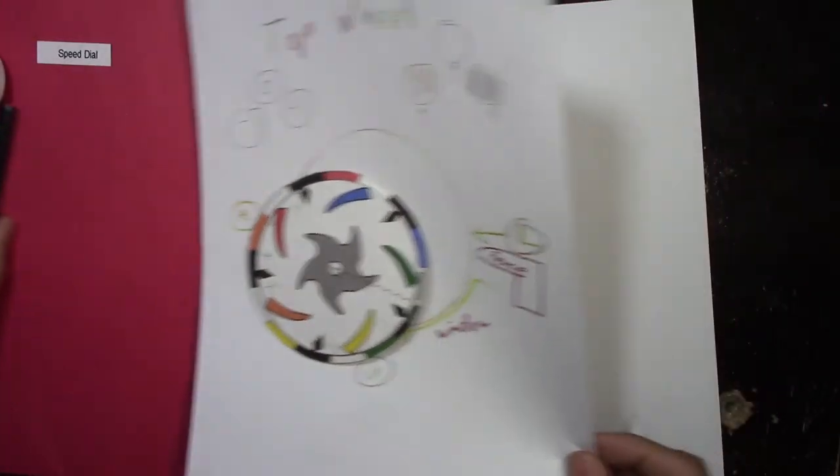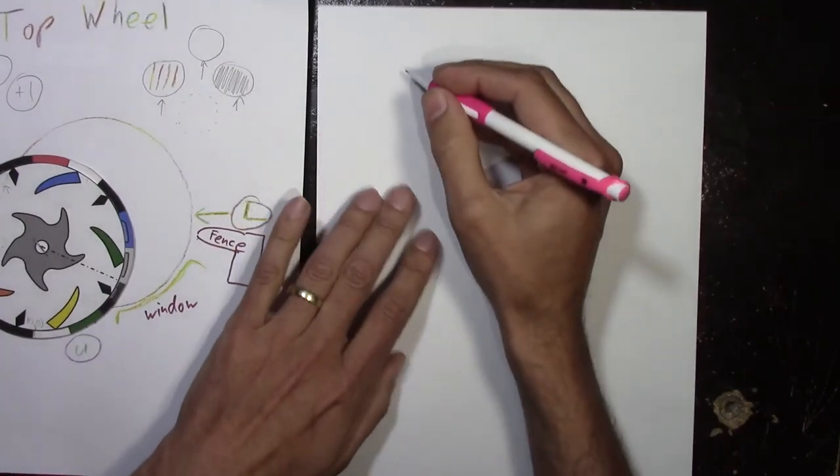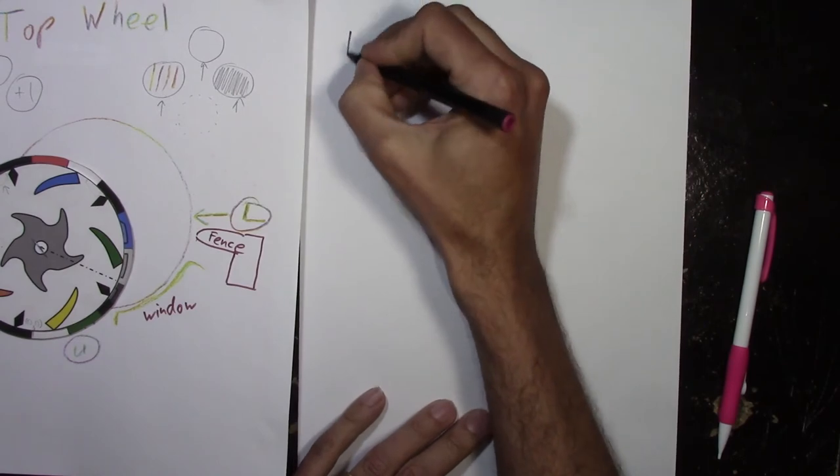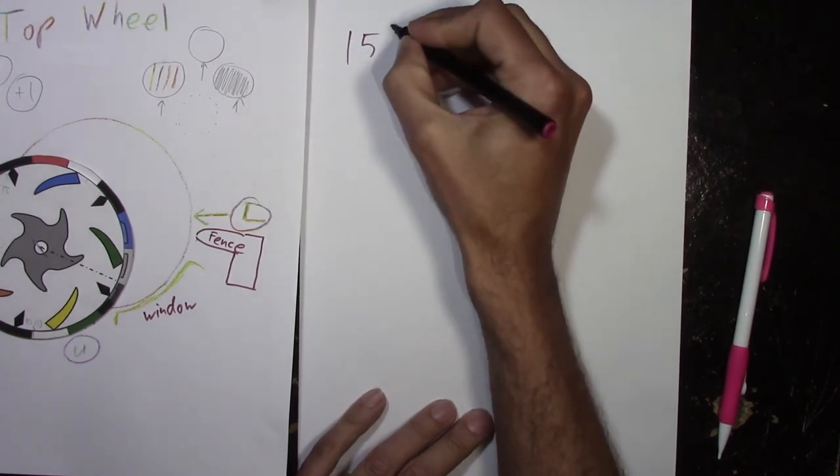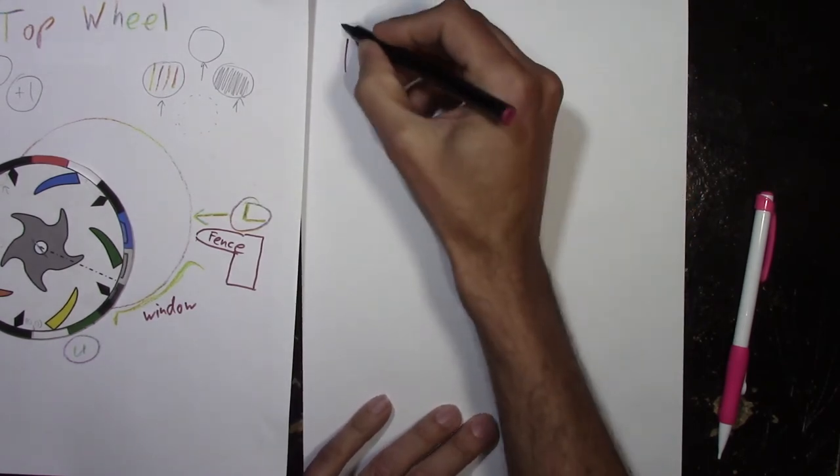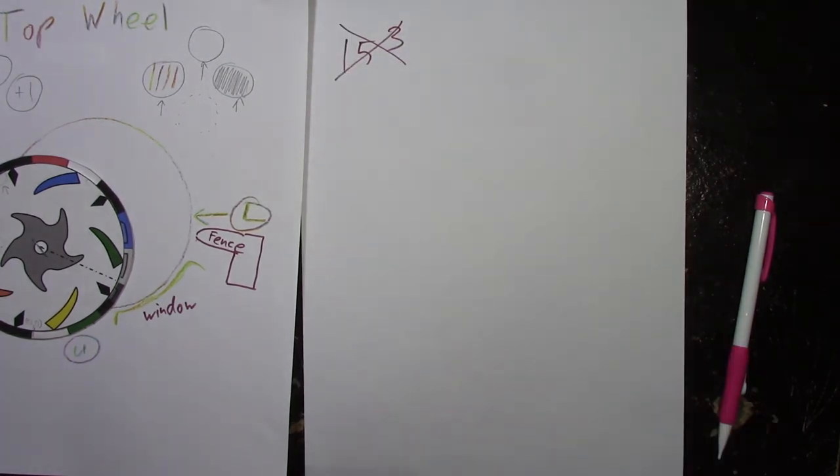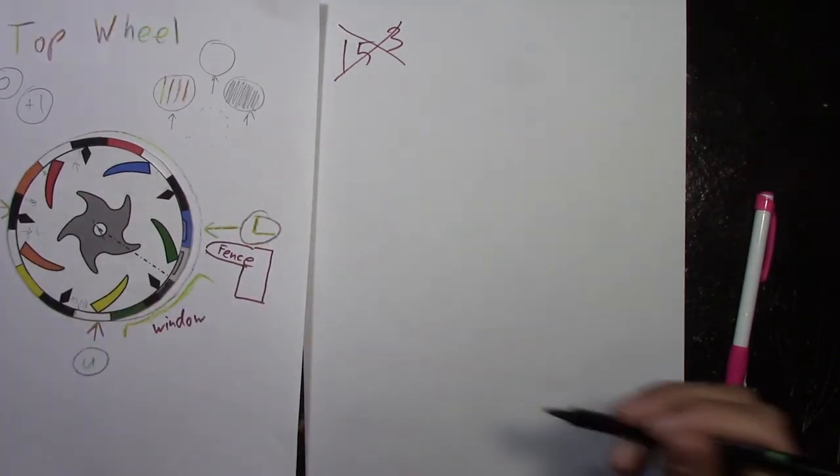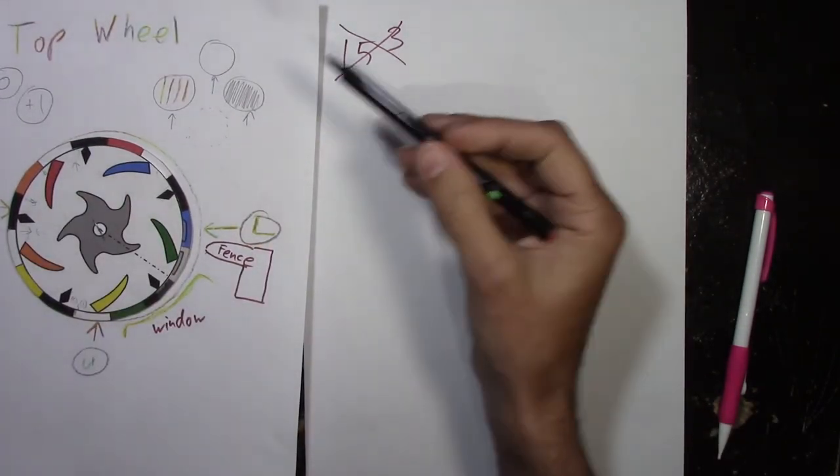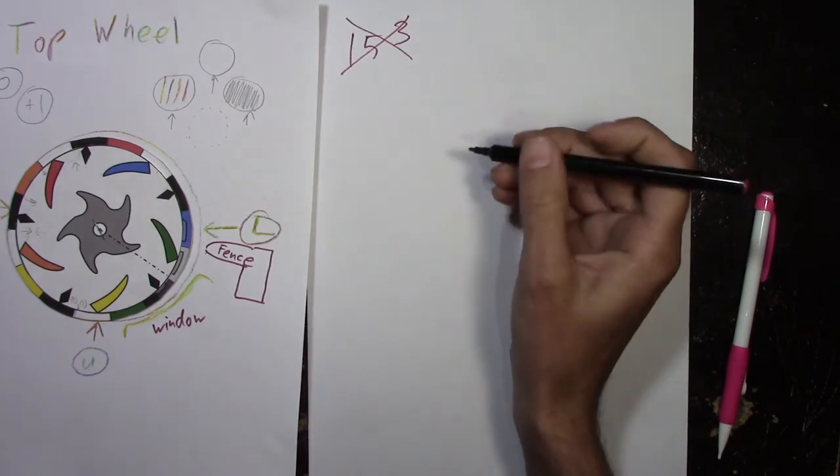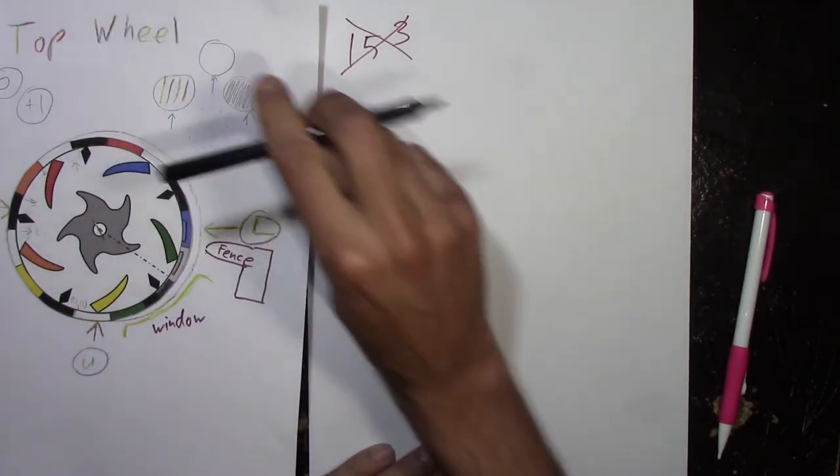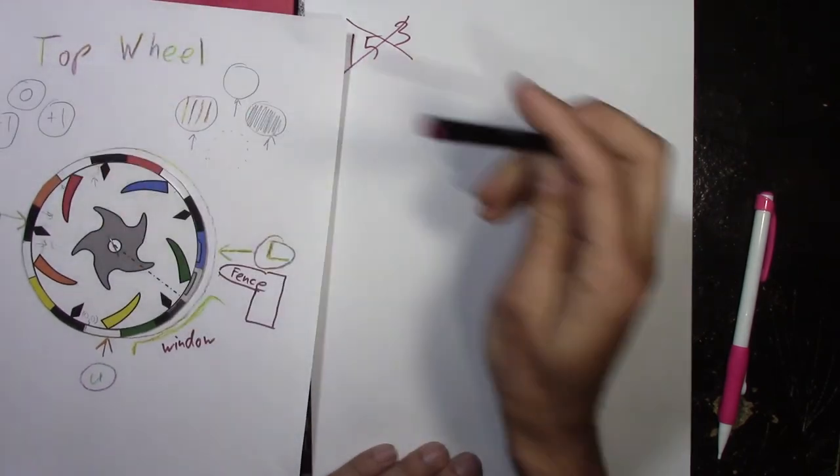We can use that knowledge to greatly reduce the space we thought. What we thought was 15 to the 3 is wrong. That's not how many states there are. Let's consider the last move. There are five ways to be in each colored state in each of these three possibilities.